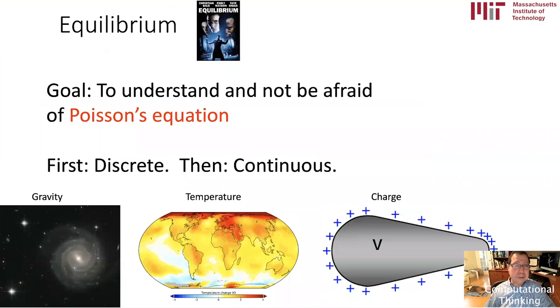So this lecture is going to be about equilibrium. I found this movie I hadn't heard about before. I don't know if it's any good or not, but at least I wanted to focus on the word equilibrium, because this is the first step to understanding and not be afraid of Poisson's equation. In this lecture, I'm going to start with discrete and then go continuous. Equilibrium can apply to galaxies under gravity, the temperature or heat distribution on the Earth, or charged particles around a conductor. In the real world, these things are always under motion. The Earth's temperature, as we know thanks to climate change, is always rising. So things are not always in equilibrium, but sometimes equilibrium is a good approximation for some small period of time.